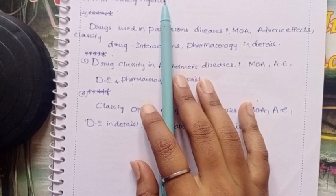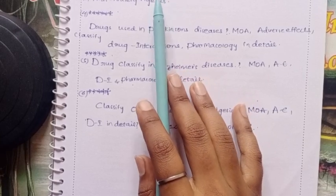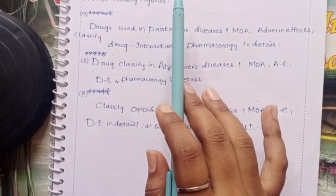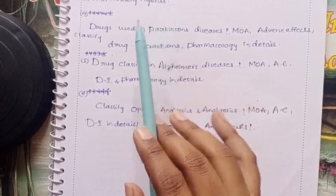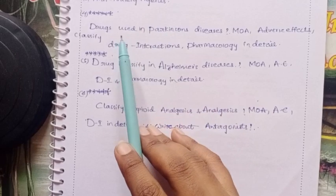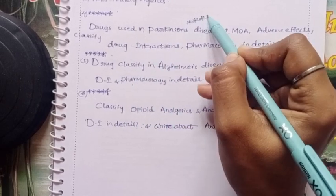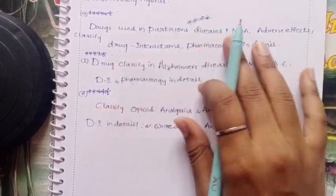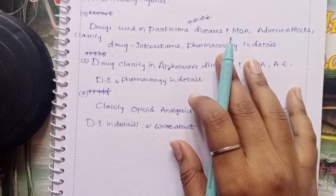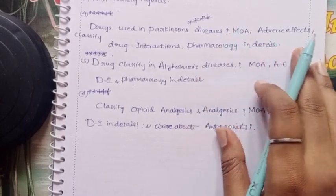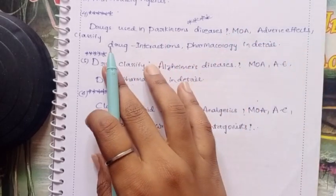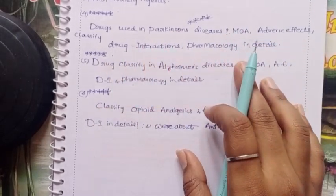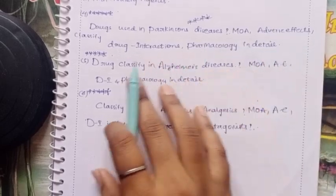Anti-depressants and anti-anxiety drugs are worth 5 marks. At minimum, basic information is required. Drugs used for Parkinson's disease are a very important question — cover mechanism of action, adverse effects, and drug interactions in pharmacological detail.